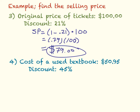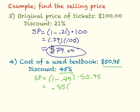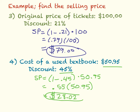Example 4: the cost of a used textbook is $50.95 and the discount is 45%. To find the selling price, I take 1 minus 0.45, which equals 0.55, and multiply that times the original price of $50.95. So 0.55 times 50.95 gives me a selling price after the discount of $28.02. That is your final answer.